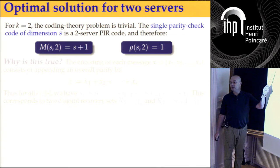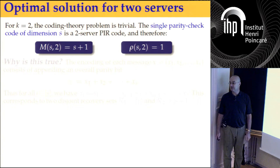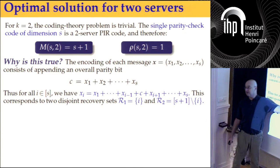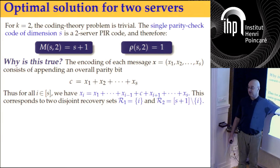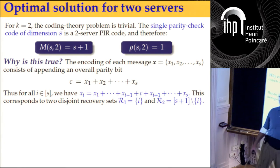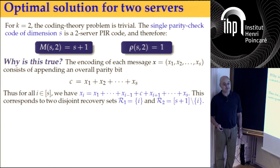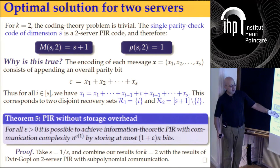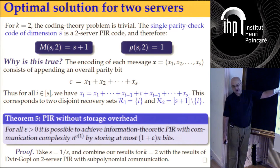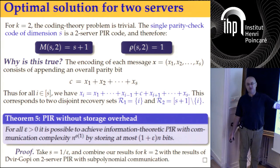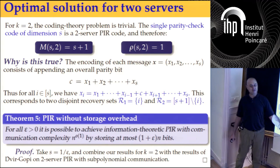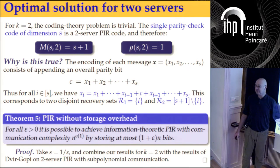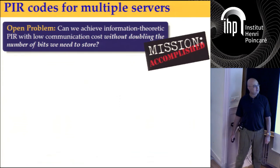For the trivial case of K equals 2: just take a single parity code — add one bit. Then for each bit, we have two recovery sets: just the bit itself, and the set of all the others. They add up. The storage overhead of this construction goes to one as S grows, since (S+1)/S goes to zero quickly.